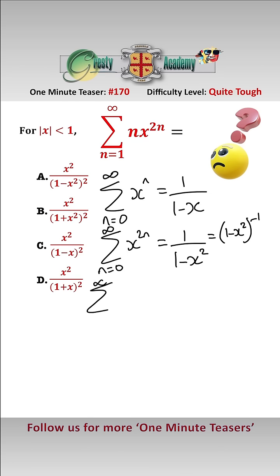Differentiating this now, we get that the sum between infinity and n equals 1, because there's one less term, is 2nx to the 2n minus 1 equals,